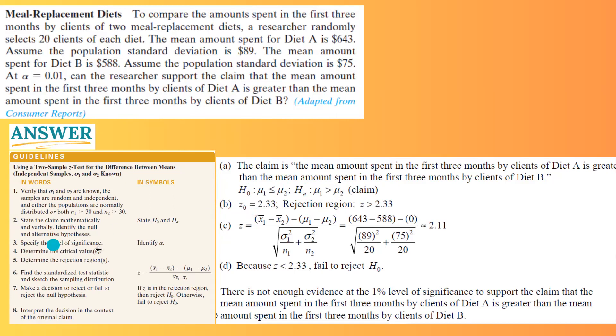What's the next step? Identify the level of significance, which is given to us as 1%. Determine the critical values and the rejection region. Since you have a right tail test, mu1 is more than mu2. Your alpha is 1%, z sub 0 is 2.33 using inverse norm.